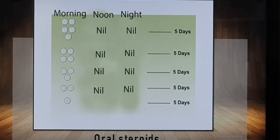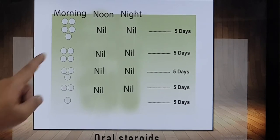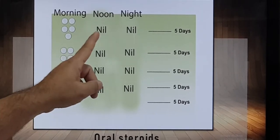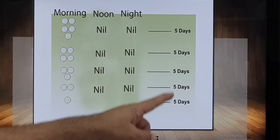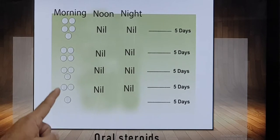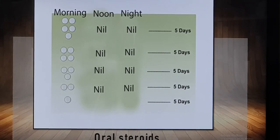Sometimes, especially in case of nasal polyp, we may need to give a course of oral steroids. Suppose after calculating the dose it comes to 50 mg per day — each tablet is 10 mg, so we give 5 tablets to be taken together in the morning, none in the afternoon or night. That will be taken for 5 days continuously. After that, we have to slowly taper: 4 tablets for the next 5 days, 3 tablets for next 5 days, 2 tablets for next 5 days, and lastly 1 tablet (10 mg) for the final 5 days.